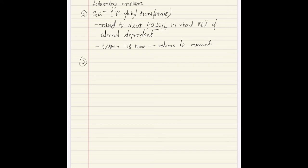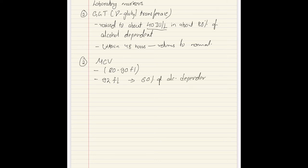Other lab markers include MCV or Mean Corpuscular Volume. Normally MCV is 80 to 90 femtoliters, but in alcohol dependence it becomes elevated — seen in almost 60% of alcohol dependent individuals. The mechanism is due to hematotoxicity of both alcohol and its metabolite acetaldehyde. Other markers include alkaline phosphatase, aspartate transaminase, alanine transaminase, uric acid, and blood triglycerides.